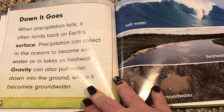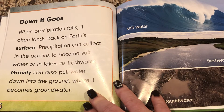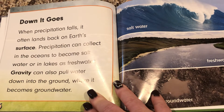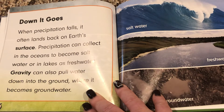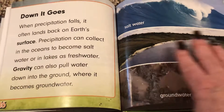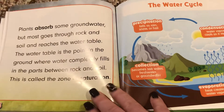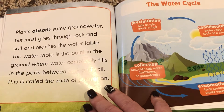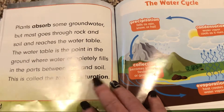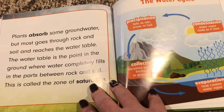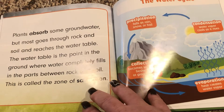When precipitation falls, it often lands back on Earth's surface. It can collect in the oceans to become salt water, or in lakes as fresh water. Gravity can also pull water down into the ground where it becomes groundwater. Plants absorb some groundwater, but most goes through rock and soil and reaches the water table — the point where water completely fills the spaces between rock and soil. This is called the zone of saturation.